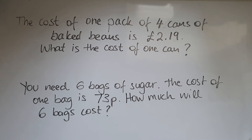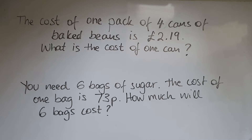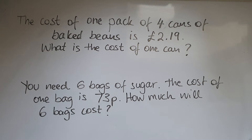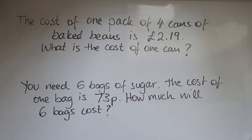In this video we'll learn to use approximation and estimation to check our calculations. This all links to rounding basically. If we have two questions like this, the first one says: the cost of one pack of four cans of baked beans is £2.19 — what's the cost of one can? So we are asked to work out the exact amount.